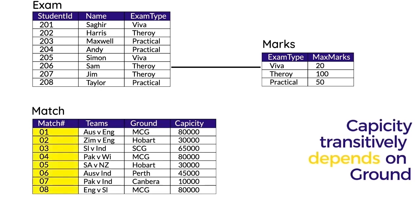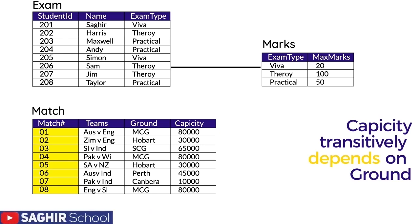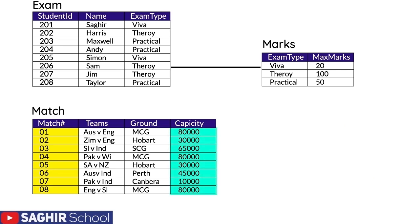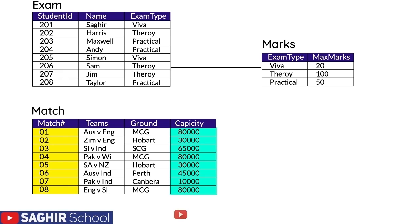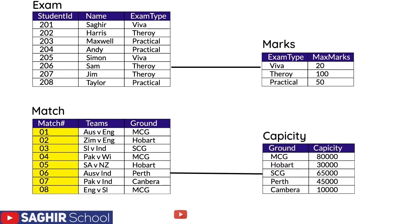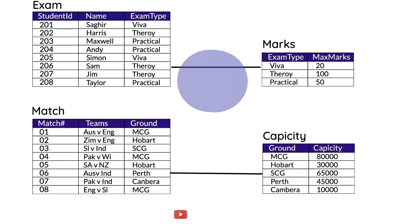Here is another example. Match Number is the primary key, and Teams, Ground, and Capacity are non-primary key columns. It's clear that if a match is played at MCG the capacity is 80,000, and if played in Hobart it's 30,000. We already know the capacity from the ground. So Capacity transitively depends on Ground, again violating Third Normal Form. We break the table, moving Capacity into a separate table with Ground.